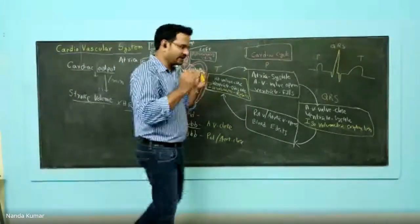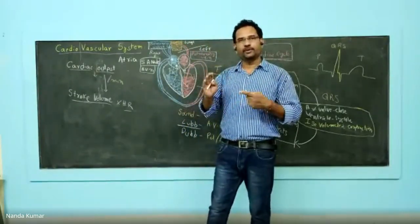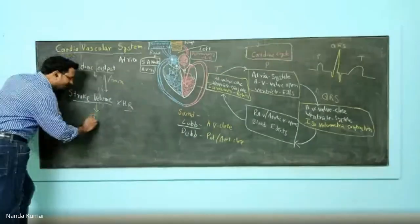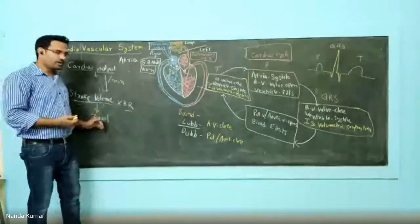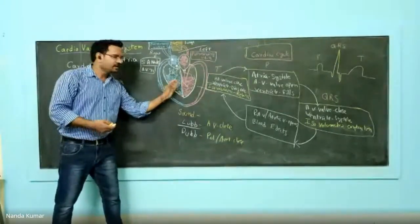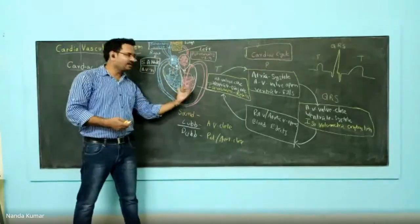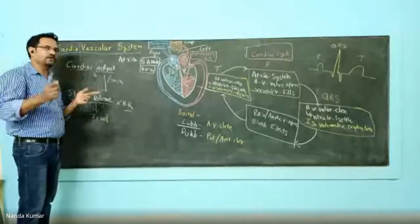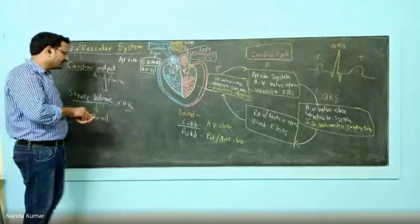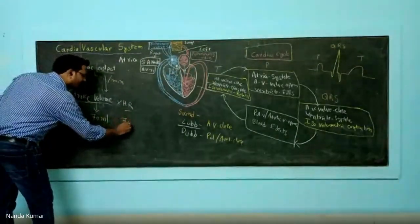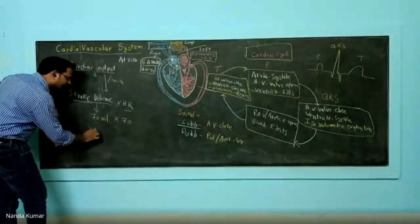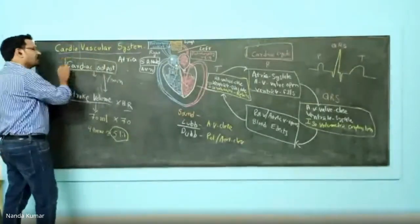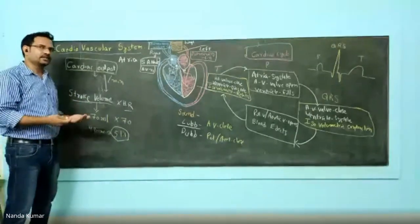In a healthy human being — all textbooks refer to a 70 kg human being — the stroke volume is 70 ml. The stroke volume is related to the ventricles. When the right ventricle contracts, it pumps 70 ml of blood into the lungs. Similarly, when the left ventricle contracts, it pumps 70 ml of blood to the aorta. The heart rate is approximately 70 beats per minute, so multiplying gives around 4900 ml, which is approximately 5 liters — that is the cardiac output.